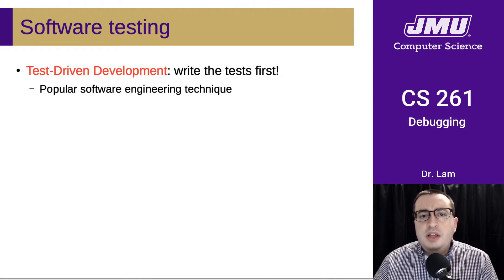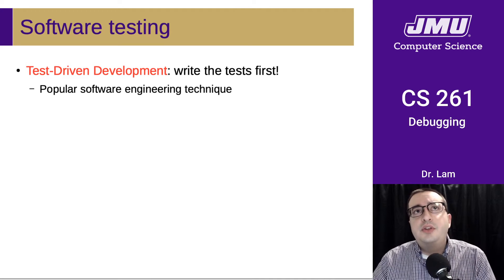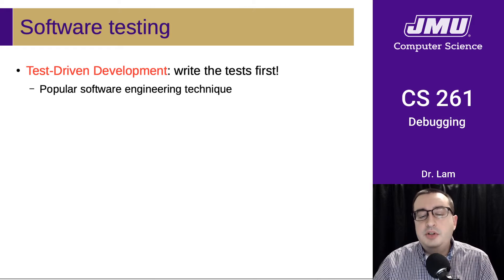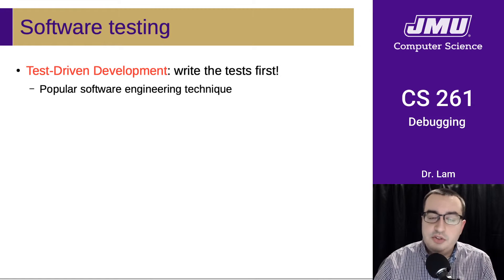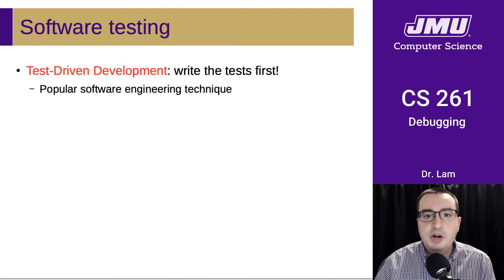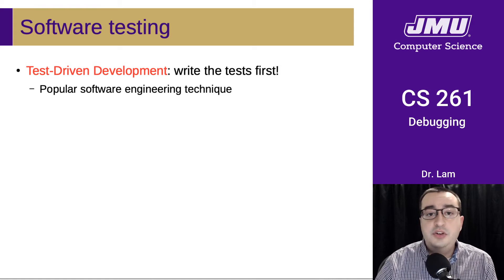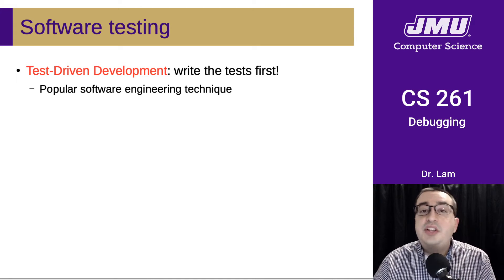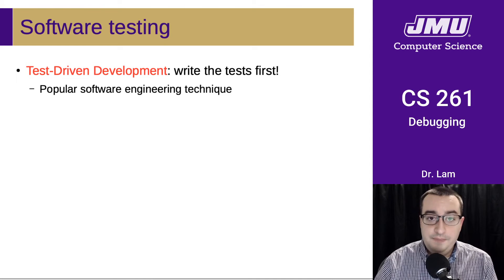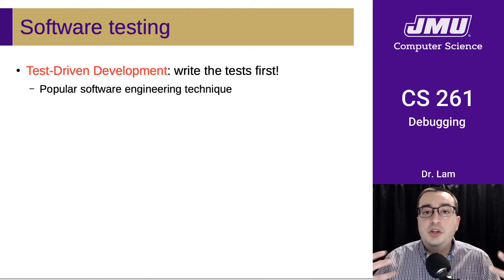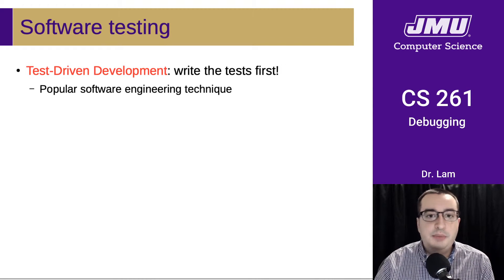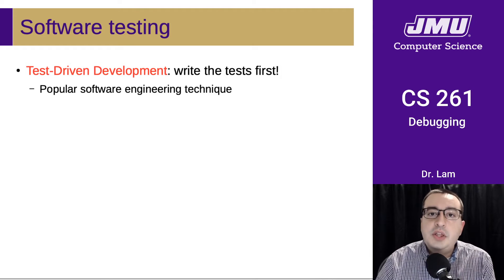I would encourage you in this course to take a different approach. I'm going to introduce some terms from software engineering. If you've taken CS345, you may have already encountered some of these. I'm going to encourage you to follow a methodology referred to as test-driven development, where you write the tests first, figure out what needs to work, and write the code after you've determined what needs to happen. This is a very popular software engineering technique and a really good idea.